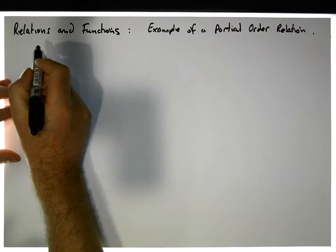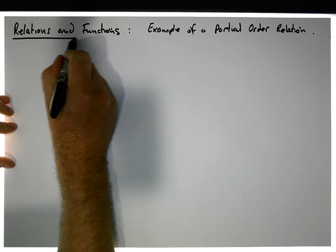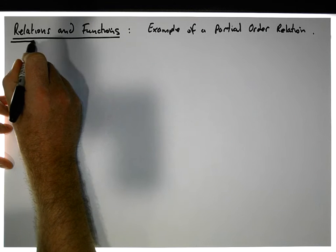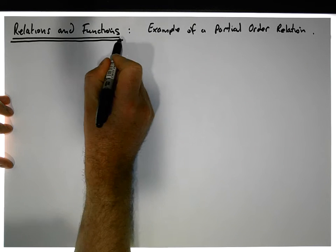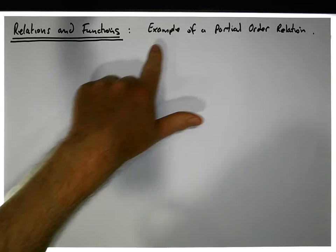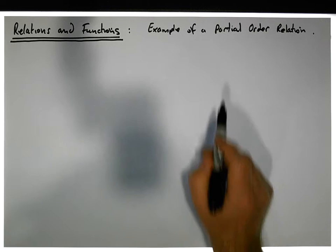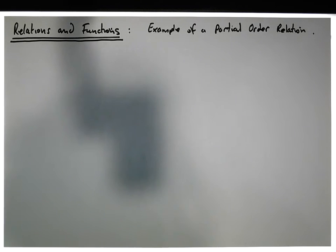Hi guys, this is Jonathan Lambert with the Mathematics Development and Support Service at the National College of Ireland. In this short video, another video in our series of videos dealing with relations and functions, I'm just going to provide an example of a partially ordered relation.